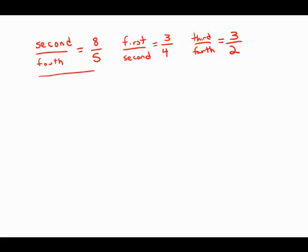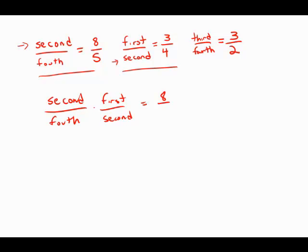Now notice, if I look at just these first two, I have second graders in the numerator here and second graders in the denominator here, and I'm not really interested in having second graders as part of the answer, so I'm just going to multiply these two. So second over fourth times first over second equals 8 over 5 times 3 over 4. Second cancels. This will be my ratio of first to fourth, and this equals, I'll cancel a factor of 4 before I multiply here. This equals 6 over 5, the ratio of first graders to fourth graders.